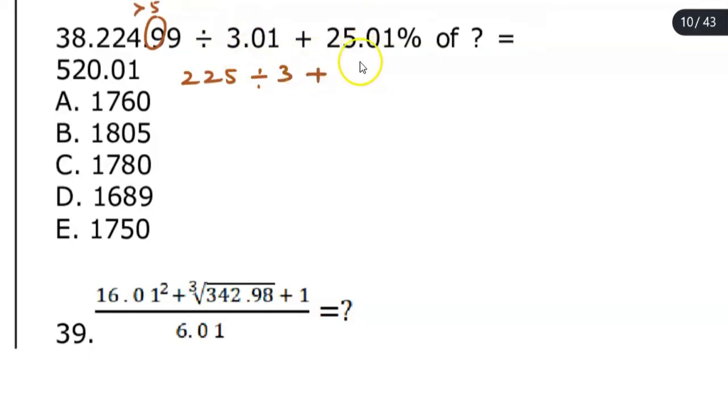Plus 25.01% of x equals 520.01. This can be ignored and just written as 520. So 225 divided by 3, which is 75.